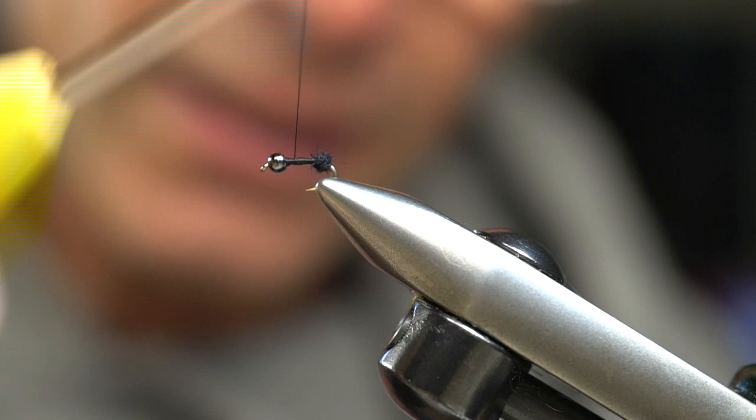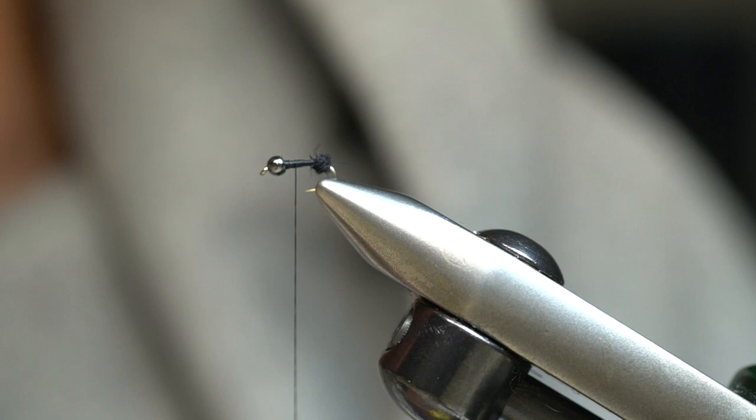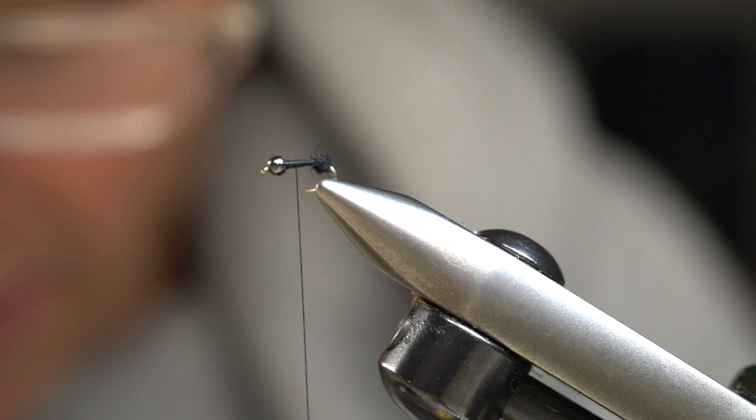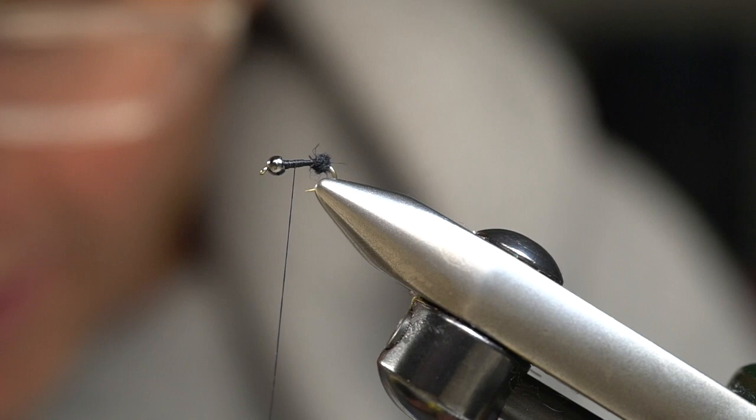Now just take your thread, we're going to split the difference between the ball of dubbing and the bead, and then also making sure that the thread's halfway in between. The legs that you're using on this can be any material. It can be hen hackle, it can be traditional rooster hackle in black.